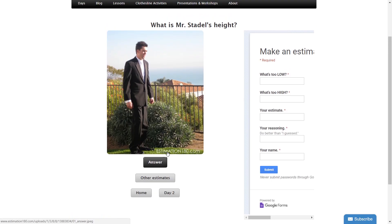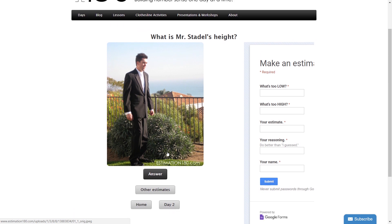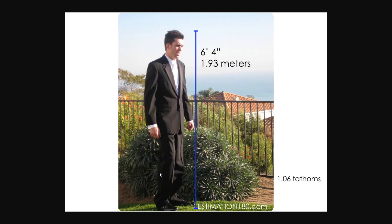Once you think you've got all three answers, you can click on the answer to reveal it. You can see that he is 1.93 metres — I said 1.89, so I was pretty close. Or, if you're talking in terms of feet, he's six feet four.